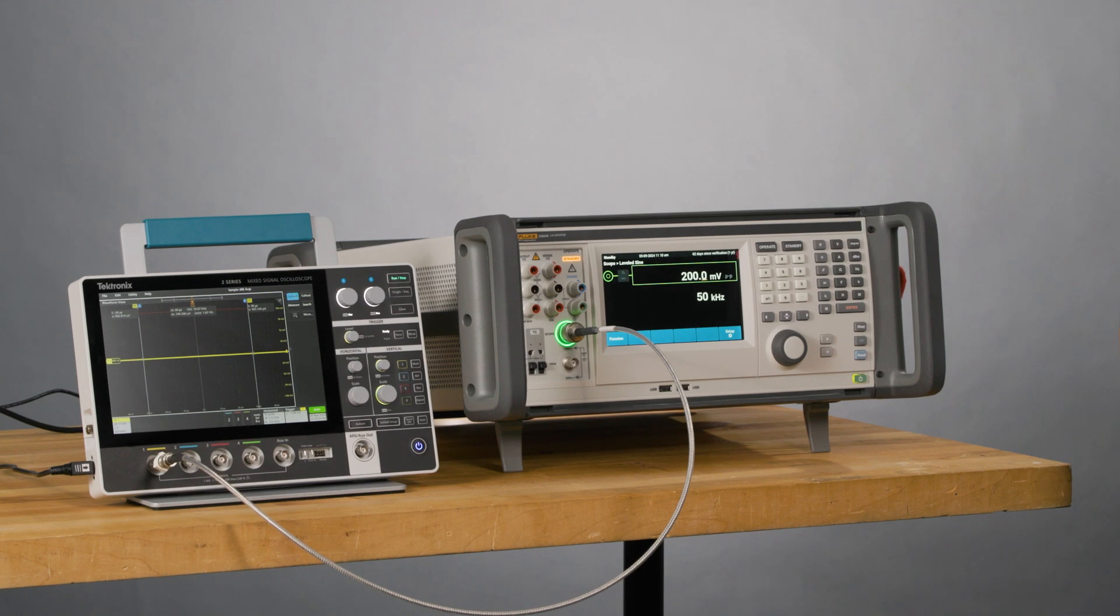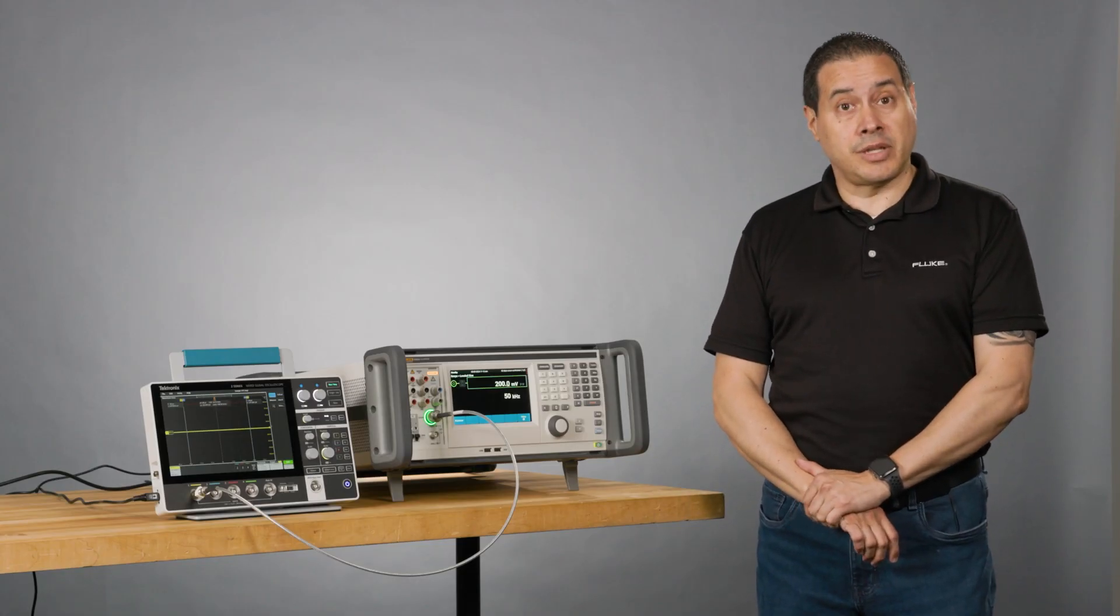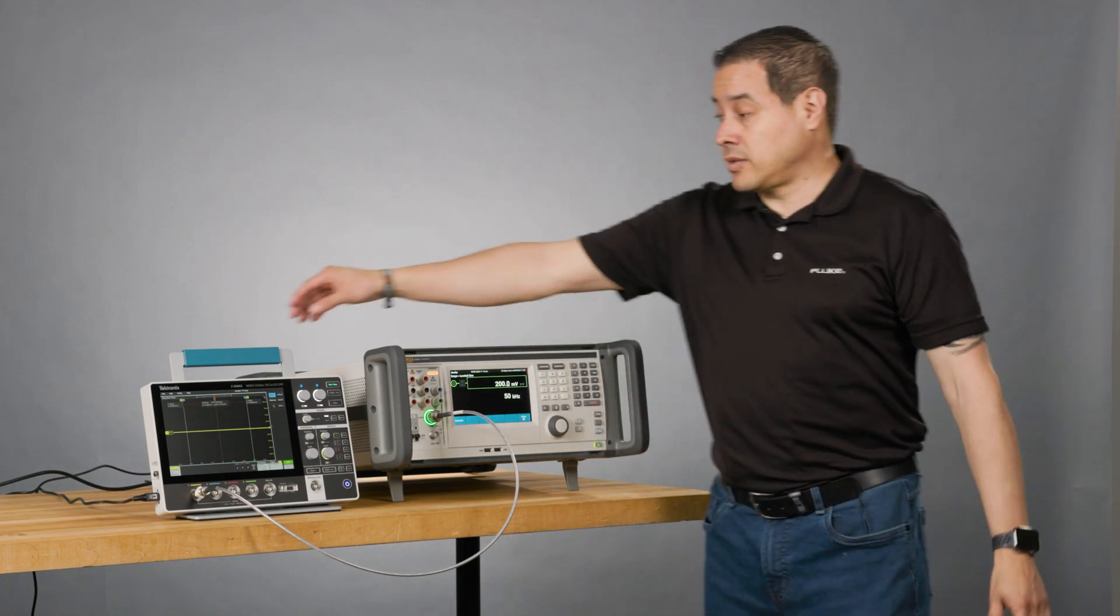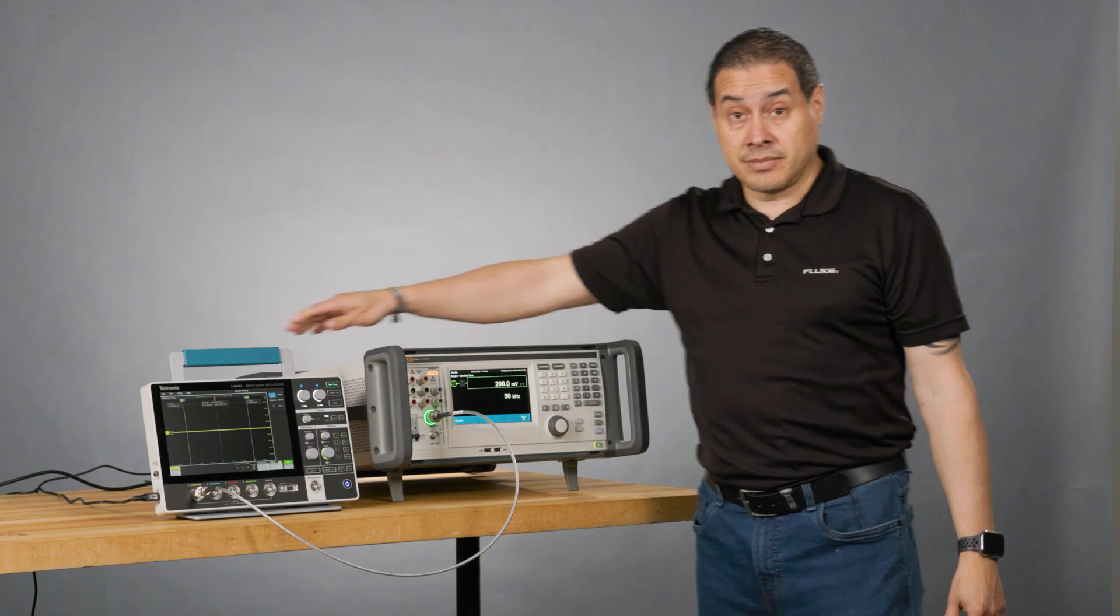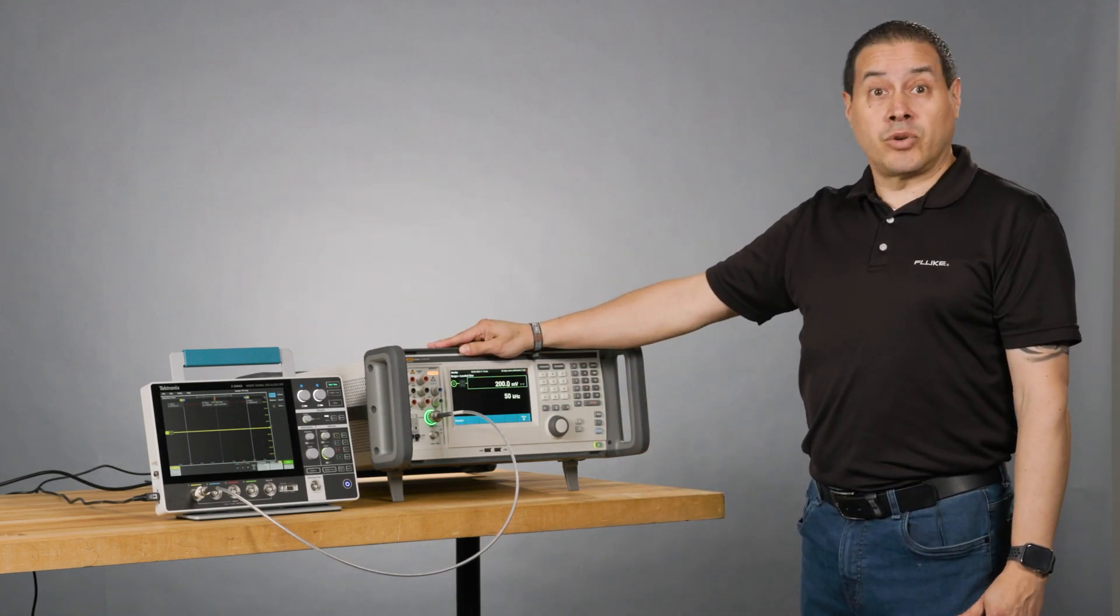When I'm done with the level sine, I'll be jumping to bandwidth testing, which is interesting to see. So I'm going to show you how bandwidth testing works. This oscilloscope has 500 megahertz bandwidth. This unit has 2 gigs, so it's four times better.